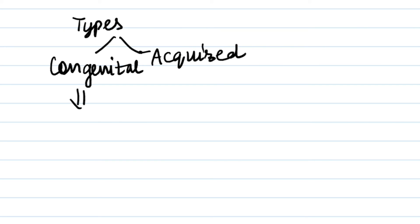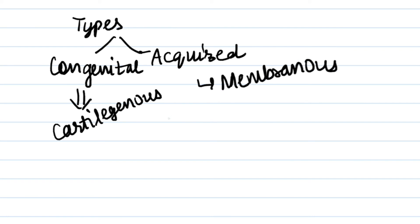There are two types: congenital and acquired. In congenital, they are cartilaginous. In acquired, they are membranous. Most common cause is long-term intubation.